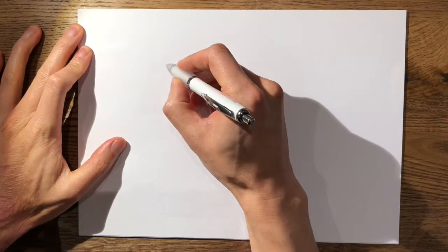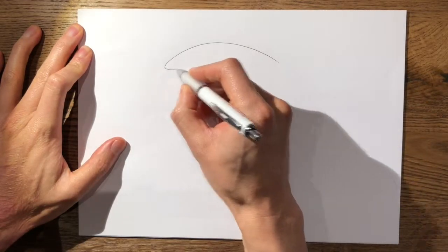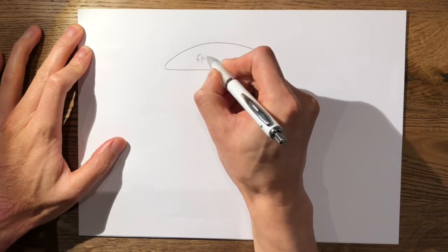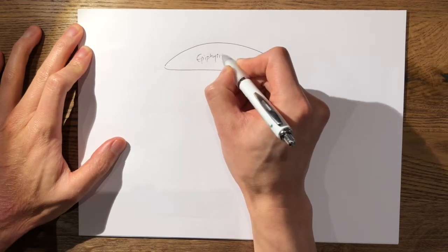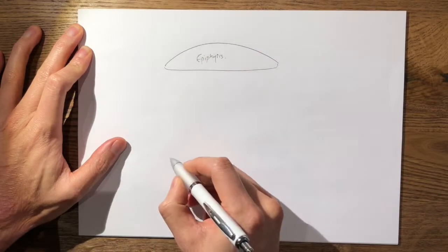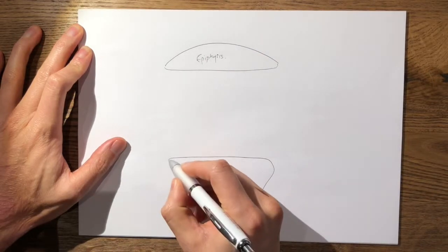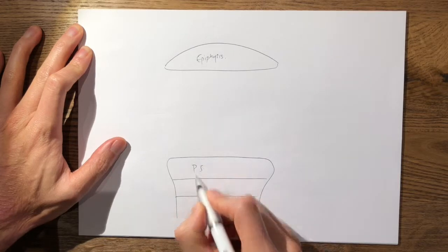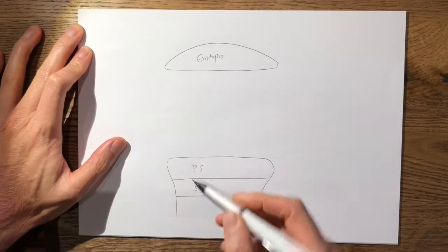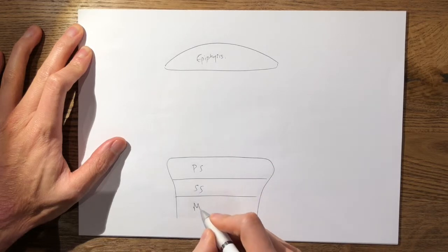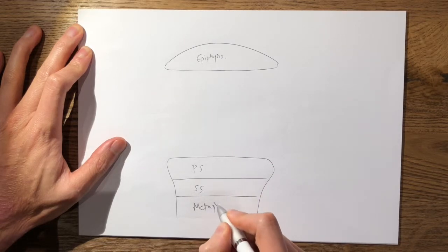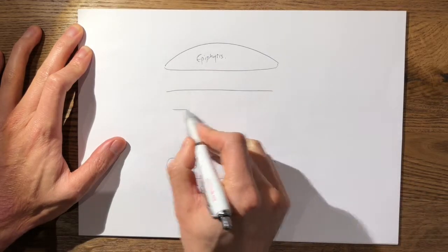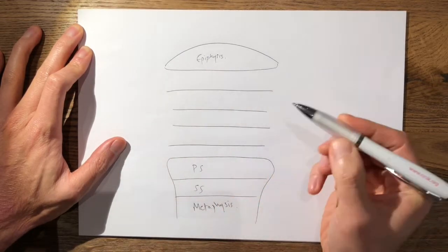So first of all I start off by drawing the epiphysis, and then I leave a space for the five layers of the physis. Then I start to draw the metaphysis which first has the primary spongiosa, the secondary spongiosa in two layers, and then the metaphysis down here. And then I draw the five layers of the growth plate.